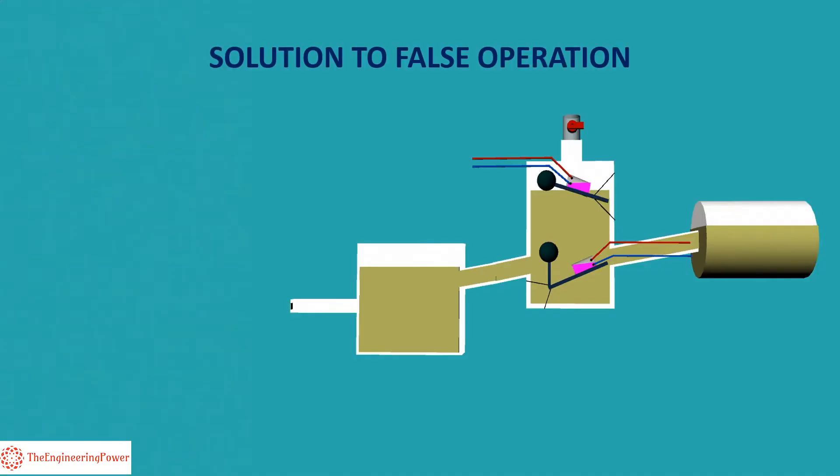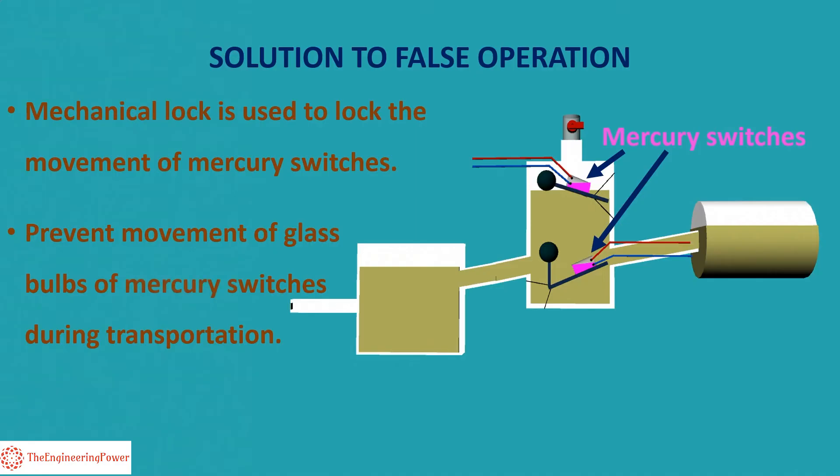The solution to this problem is that mechanical lock is used to lock the movement of mercury switches when oil is being added to a transformer to protect false operation of Buchholz relay resulting in alarm. Mechanical lock is also useful in preventing unnecessary movement of glass bulbs of mercury switches during transportation of Buchholz relays, hence resulting in preventing any damage to mercury switches.